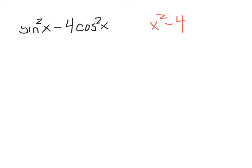Then all you're doing is taking the square root of each term. So the square root of sine squared is sine. And the square root of 4 cosine squared is 2 cosine. And one gets a plus and one gets a minus.